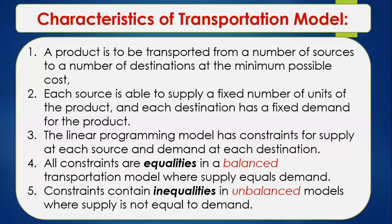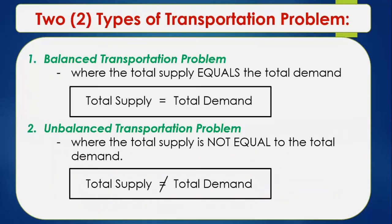There are two types of transportation problems. First, we have the balanced transportation problem, where total supply equals total demand, as shown in the equation. Second, we have the unbalanced transportation problem, which occurs where total supply is not equal to total demand.